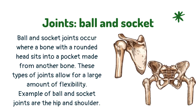Ball and socket joints occur where a bone with a rounded head sits into a pocket made from another bone. These types of joints allow for a large amount of flexibility. Examples of ball and socket joints are the hip and shoulder.